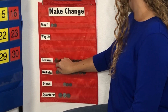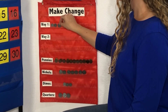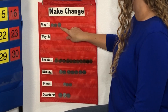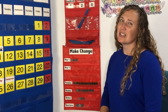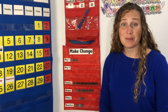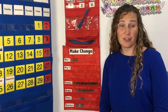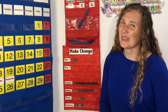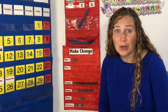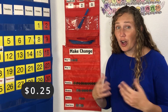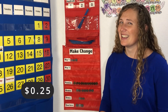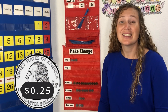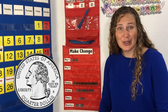20 plus 5 equals 25 cents. What's another way we can make 25 with coins? We have a coin that's worth 25 all by itself — it's called a quarter. Let's use a quarter.